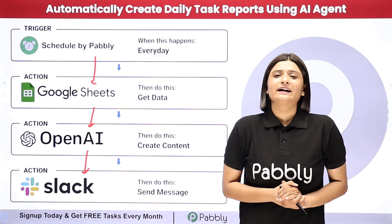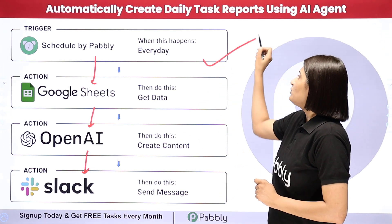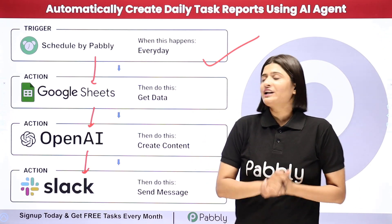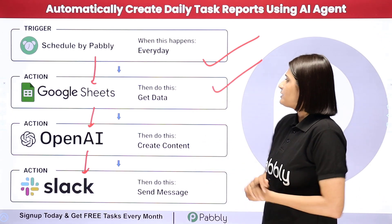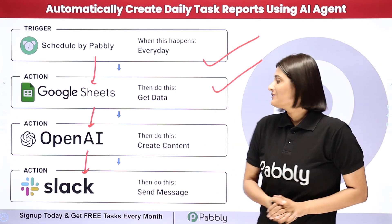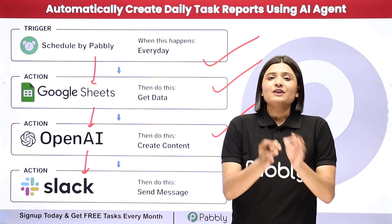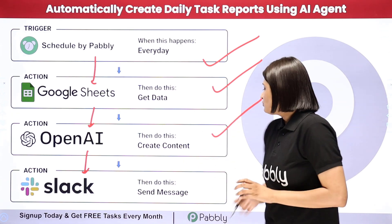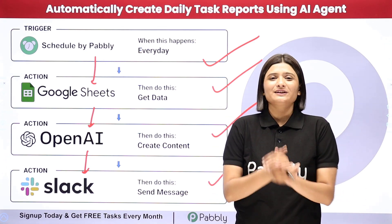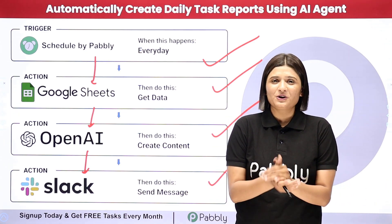With the help of Pabbly Connect I have built this connection in such a way that I am going to schedule this workflow to run every day. Whenever I receive the work report of my employees, that will be automatically generated with the help of OpenAI, which is my AI agent, and that work report will be sent to me or my team on the Slack channel. If you want to learn the step-by-step process, let me take you all to my screen.